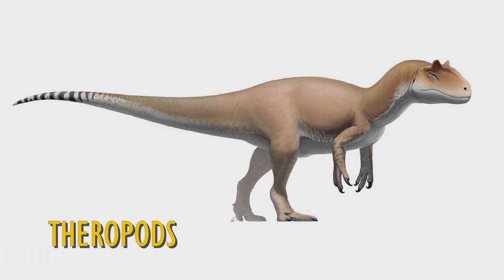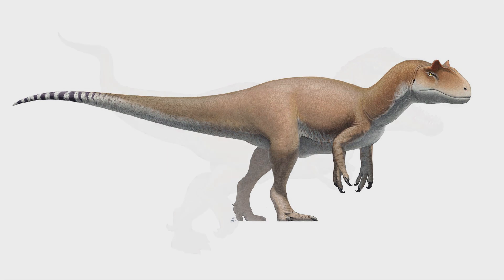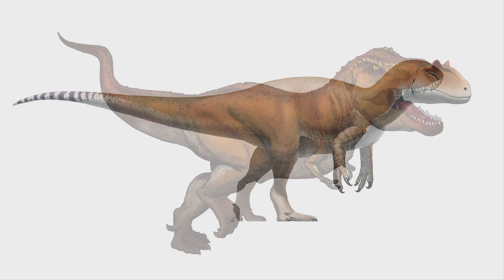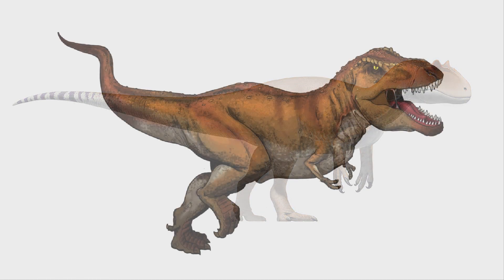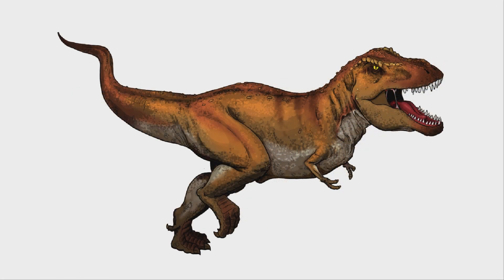The chicken's origins lie in a group of dinosaurs called theropods, around 230 million years ago. They evolved over the years and eventually resulted in a genetic line that produced Tyrannosaurus rex, also called T-Rex.